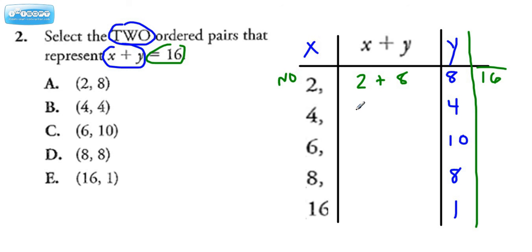Alright, let's put in the 4 for the x. Substitute it in. And for y, we'll substitute in the 4. And is 4 plus 4, 16? It's not. So that's going to be a no. We're going to reject that one. So we have no and a no. Remember, we need 2.